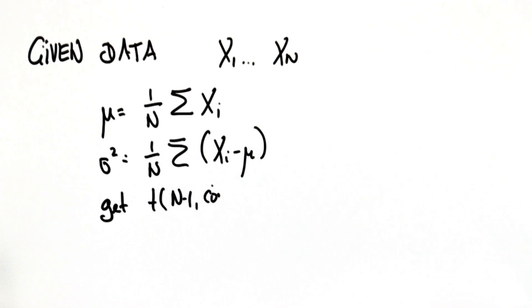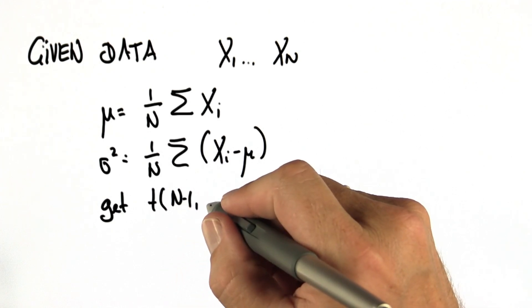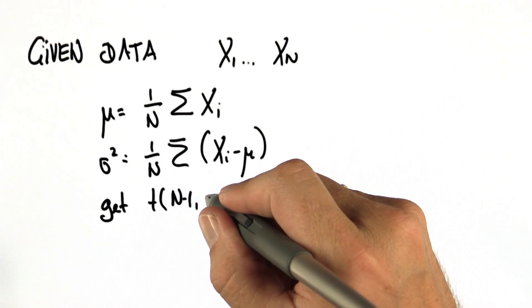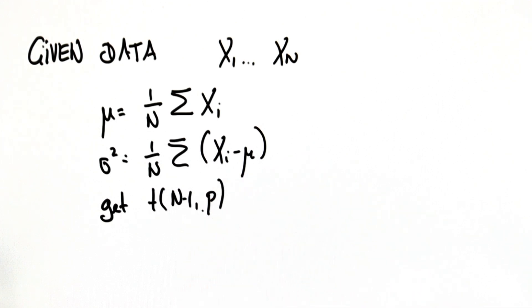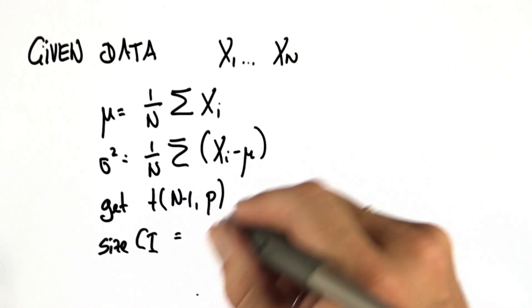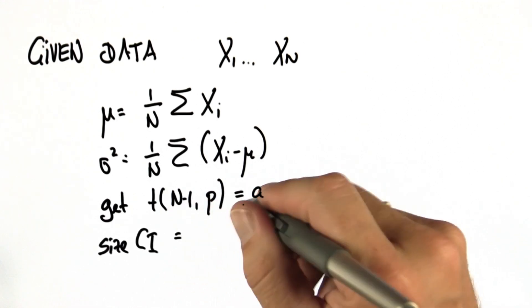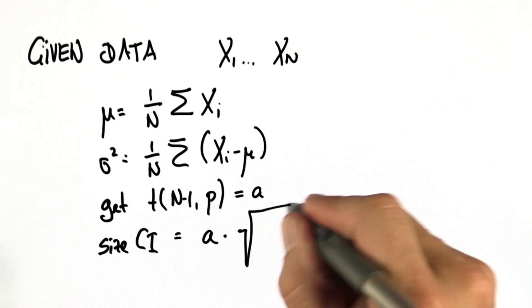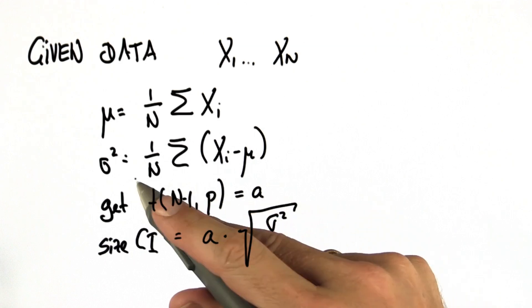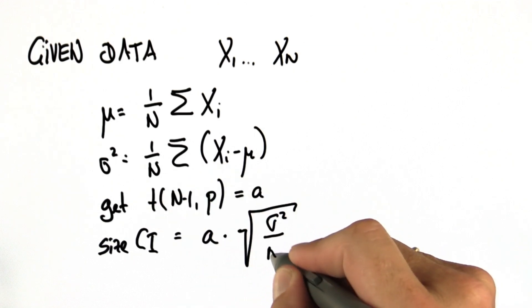Given the sample or data, you compute the mean, you compute the variance, you get the t value at some desired error probability p, and you have to make sure you pick the correct one. If it's one-sided, you pick a different one from the two-sided. And then the plus-minus term in the confidence interval is simply this number over here times the square root of the empirical variance over n.